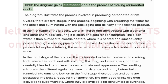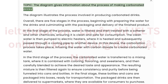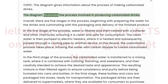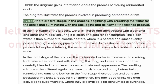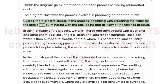The diagram illustrates the process involved in producing carbonated drinks. Overall, there are five stages in the process, beginning with preparing the water for the drinks and culminating with the packaging and delivery of the finished product.